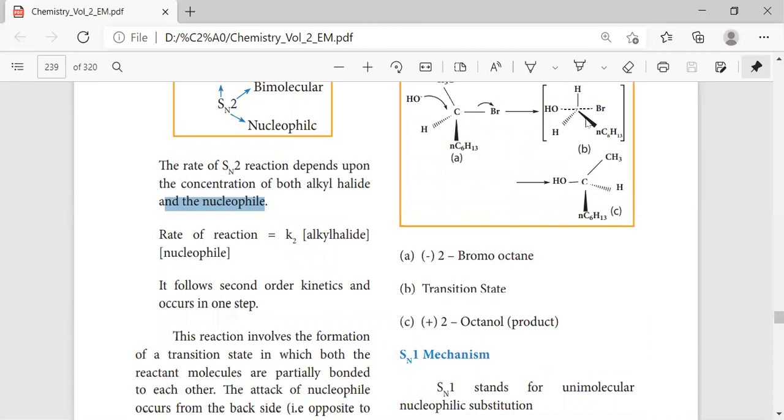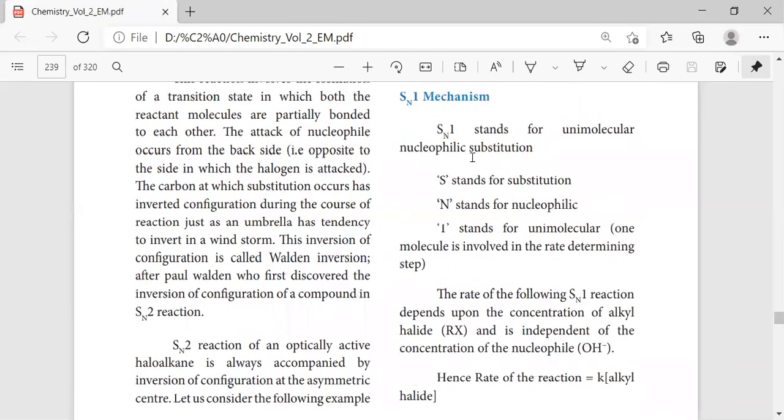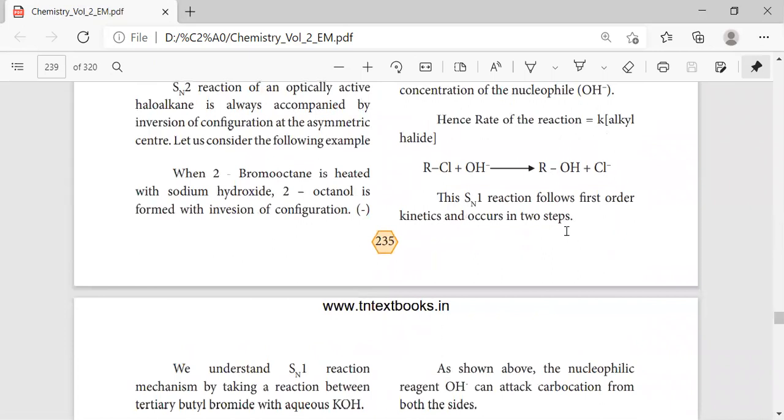In SN1 mechanism, S stands for substitution, N stands for nucleophilic, 1 stands for unimolecular. Here the rate is a first order reaction. The alkyl halide reacts with the hydroxyl group which leads to the formation of alcohol with the elimination of chlorine molecule.